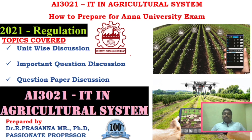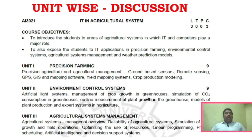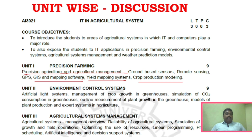We will now start unit-wise discussion. Unit 1 covers precision agriculture and agriculture management. It includes yield mapping systems and crop production modeling. These are the main areas we will concentrate on. Unit 2 is the environment control system, covering simulation of CO2 concentration.